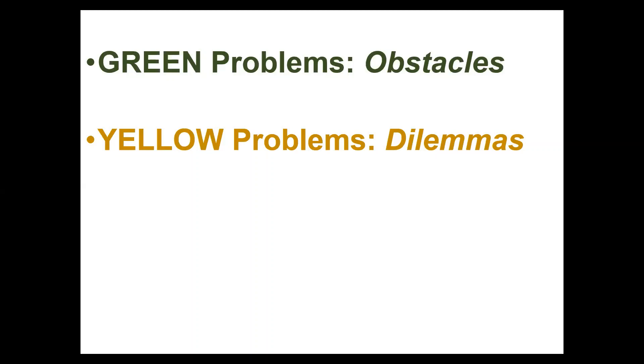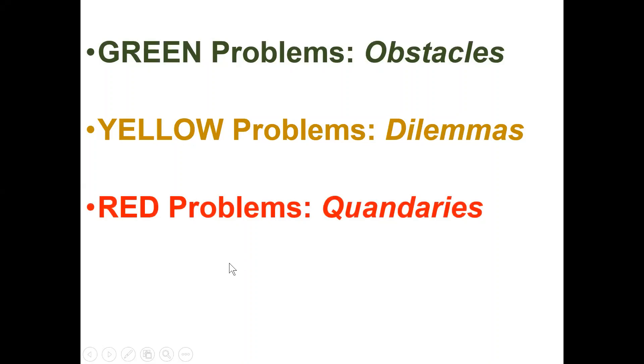A red problem, these we call quandaries. Quandaries are typified by high degrees of ambiguity and uncertainty. In a dilemma we know the cost-benefit analysis, the pros and cons, we're struggling between picking the least worst option. But we know what our options are. In a quandary we don't know what the options are.